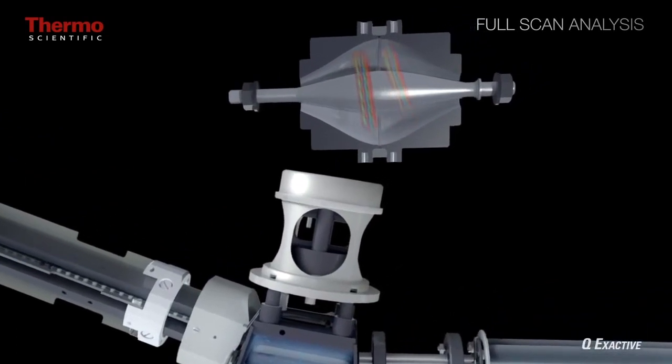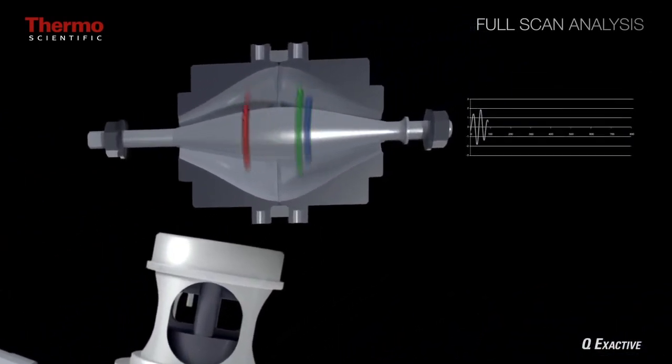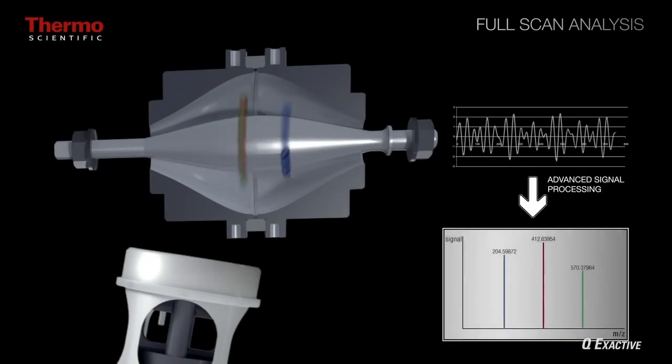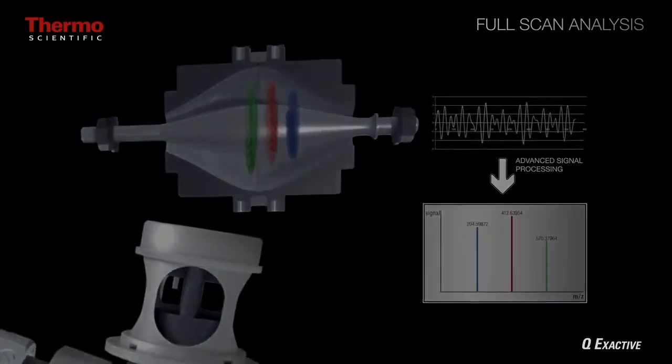In the orbitrap, ions are trapped in an orbital motion where the frequency of rotation is related to the mass-to-charge ratio. Therefore, ions with different mass-to-charge ratios will have different frequencies of oscillation.